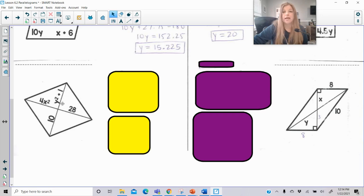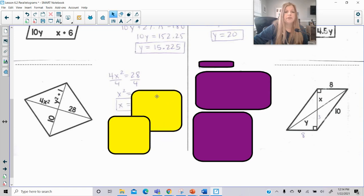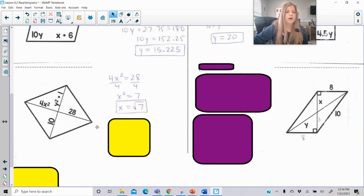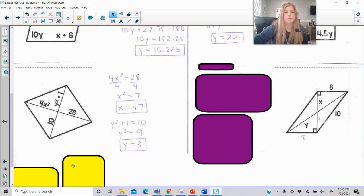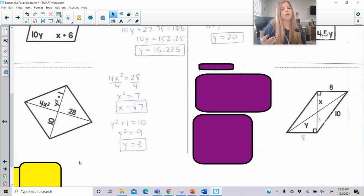We learned diagonals bisect each other. So that would tell me here that 4x squared is equal to 28. So something we definitely need to remember we can do. We need to divide both sides by 4. We then get x squared equals 7. We then need to take the square root of 7. And I'm just going to leave it at that. x is the square root of 7. And then 10 would be equal to y squared plus 1. Subtract 1. And so y is equal to 3. y could be negative 3 as well. I could call x positive and negative square root of 7.